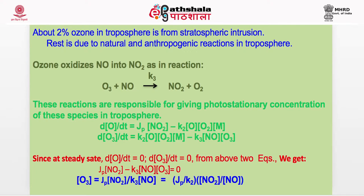The rest comes from natural and anthropogenic reactions in the troposphere. Ozone oxidizes NO into NO2 and O2. These reactions are responsible for giving photo-stationary concentrations of these species. Photo-stationary means steady state — under this photochemical reaction, at stationary state, since it is done in the presence of light, we call it photo-stationary, meaning the concentrations remain constant and the change in concentration is zero. For example, dO/dt is considered. O is formed and O3 is formed, then O3 is destroyed. So O and O3 are both intermediates and they can be described by the photo-stationary state.